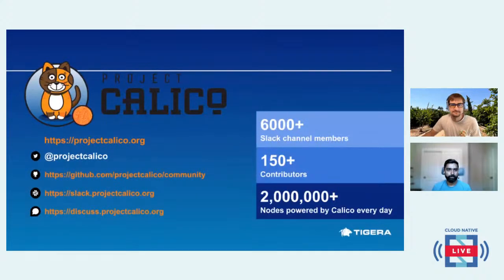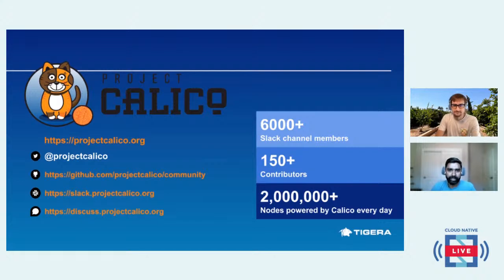Before I start, I wanted to talk about Project Calico. It's an active community for cloud networking and security. If you're not familiar with Calico, it's an open source CNI available to use on Kubernetes communities and other cloud-native platforms. There are about 6,000 active members in our Slack channel, and we have an active community of around 150 contributors. Feel free to join and discuss troubleshooting or any Q&A you have.